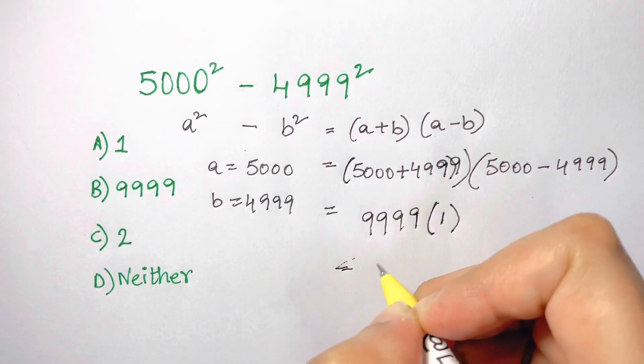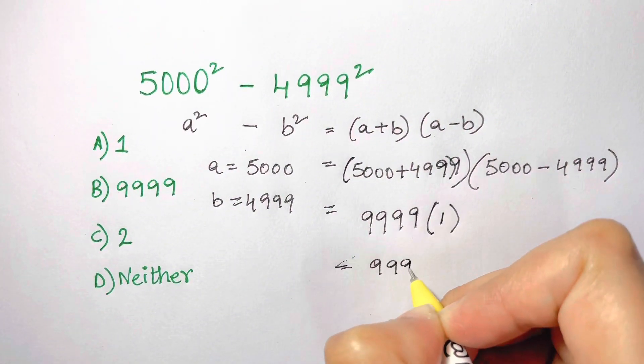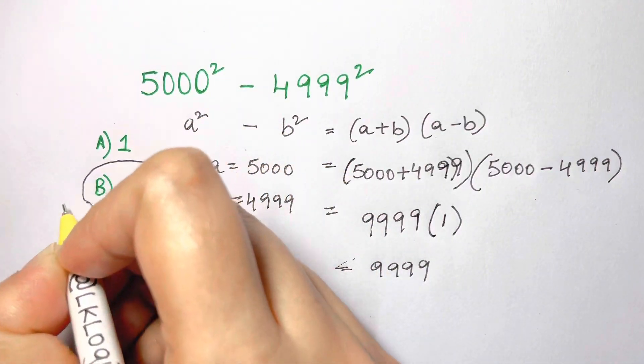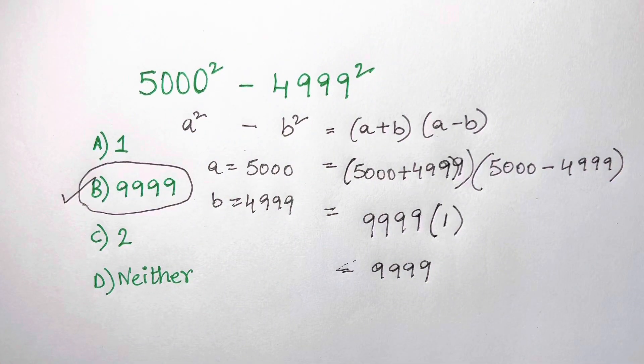So when you multiply, you only get 9999, and that's your answer, choice B. How simple was this?